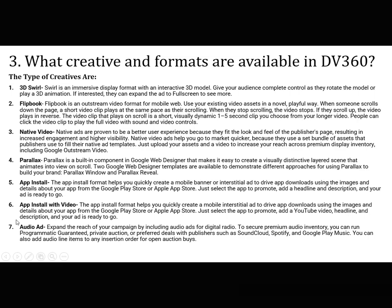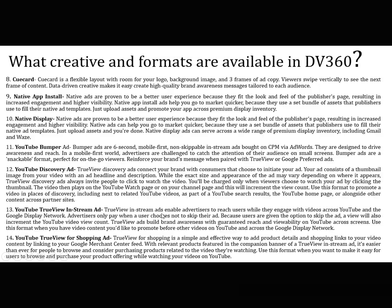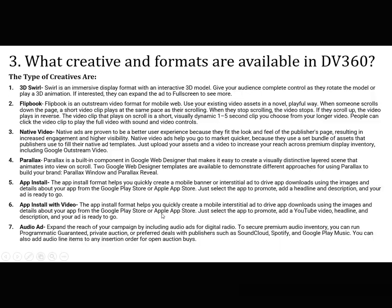App Install with Video helps you quickly create a mobile interstitial ad to drive app downloads. Just select the app to promote, add a YouTube video, headline and description, and your ad is ready to go. You also have Audio Ads, which expand the reach of your campaign by including audio ads for digital radio. To secure premium audio inventory, you can run programmatic guaranteed, private auction, or preferred deals with publishers such as SoundCloud, Spotify, or Google Play Music, or add audio line items to any insertion order for open auction buys.